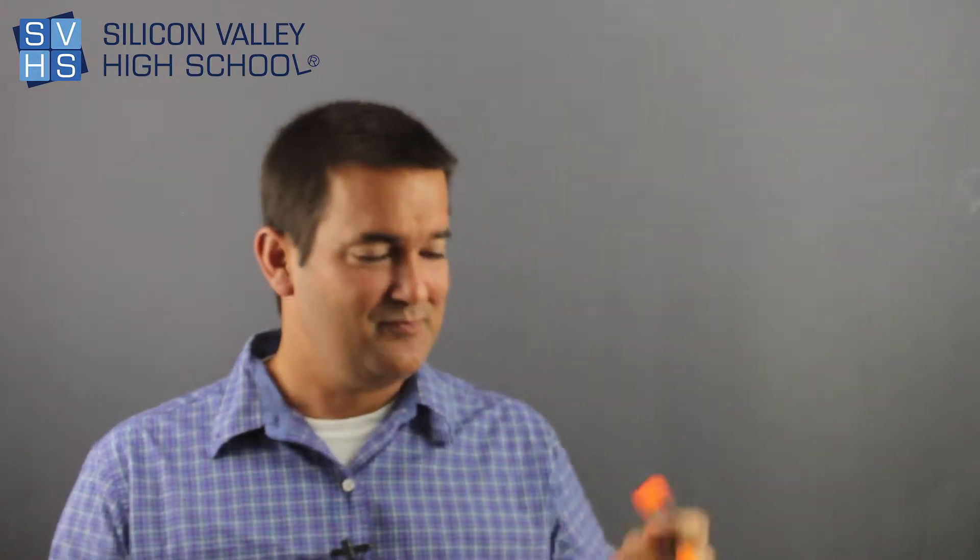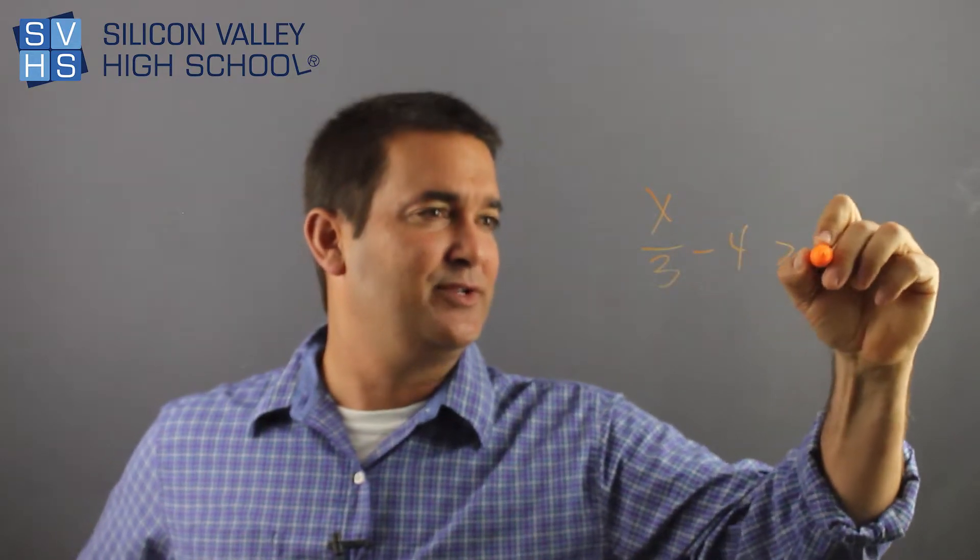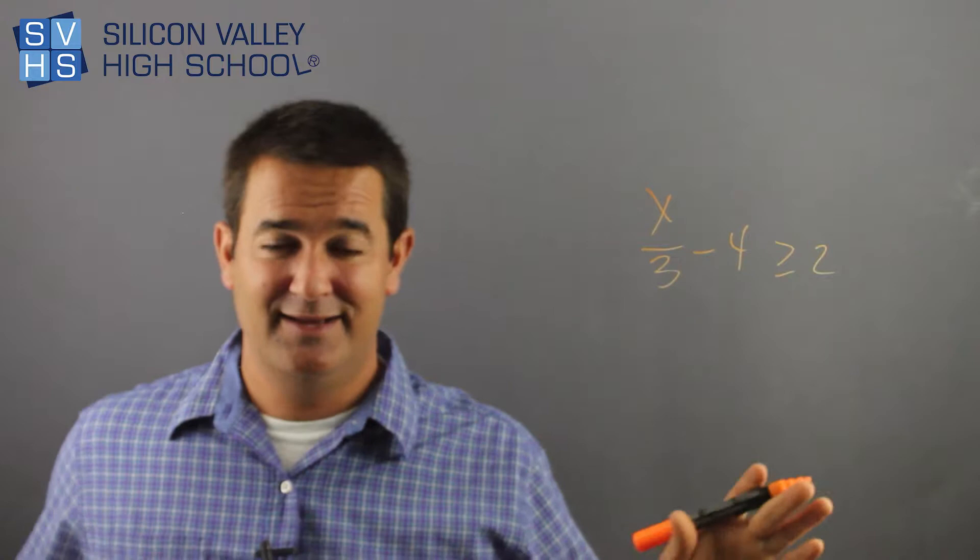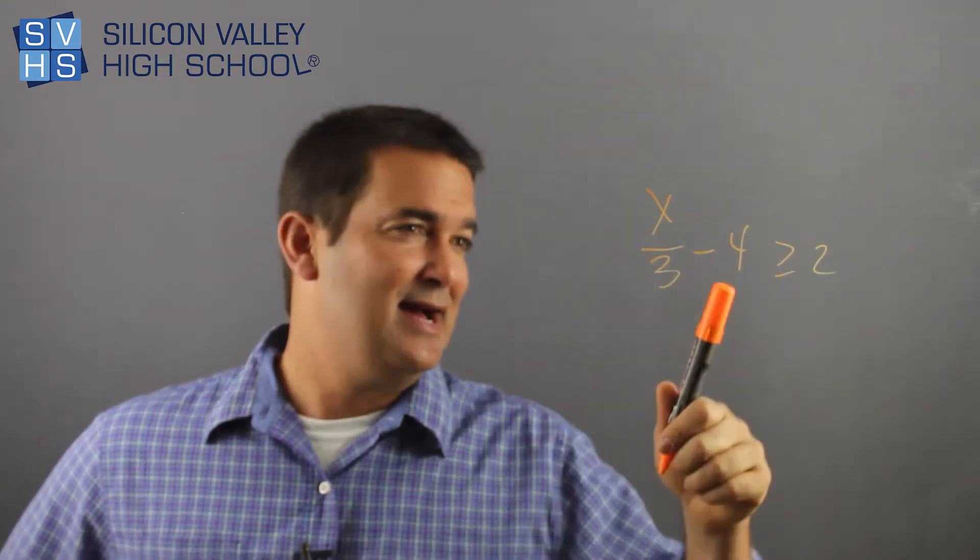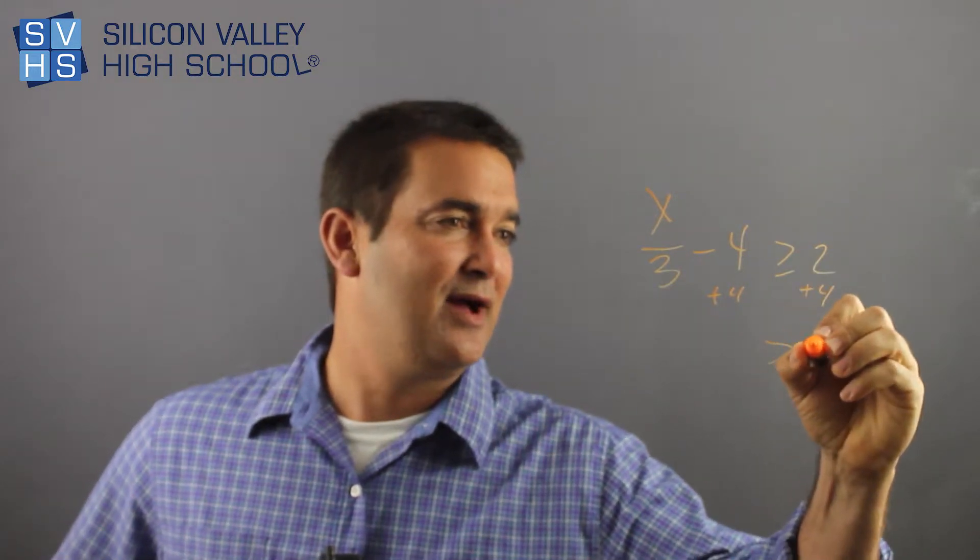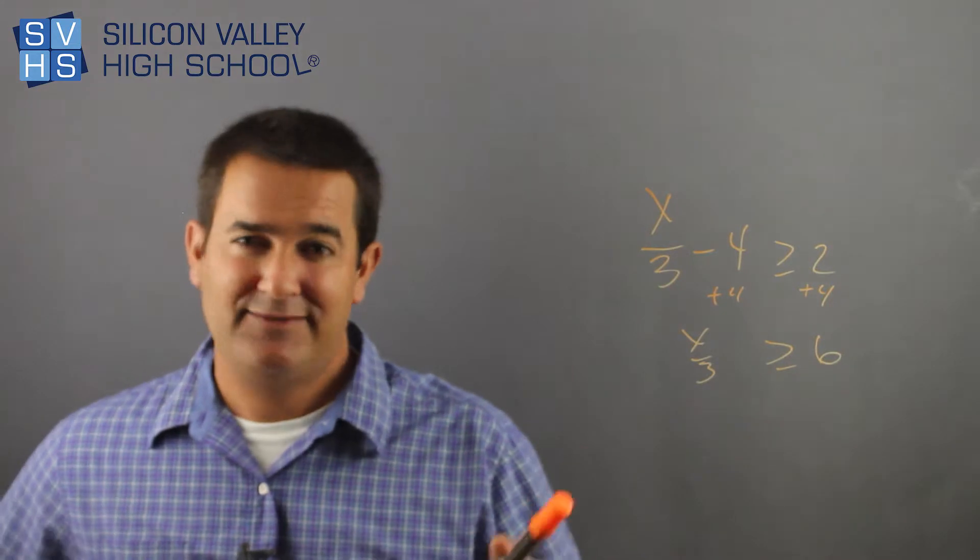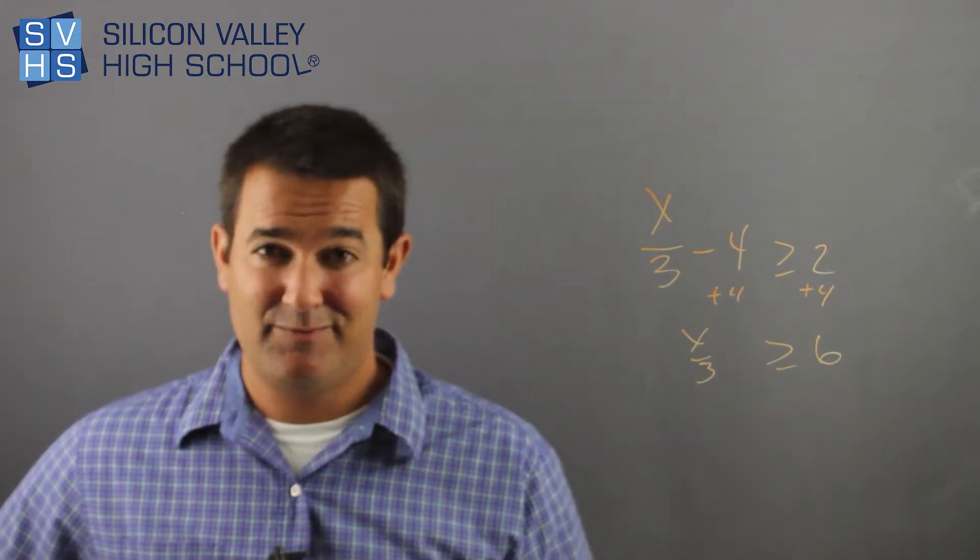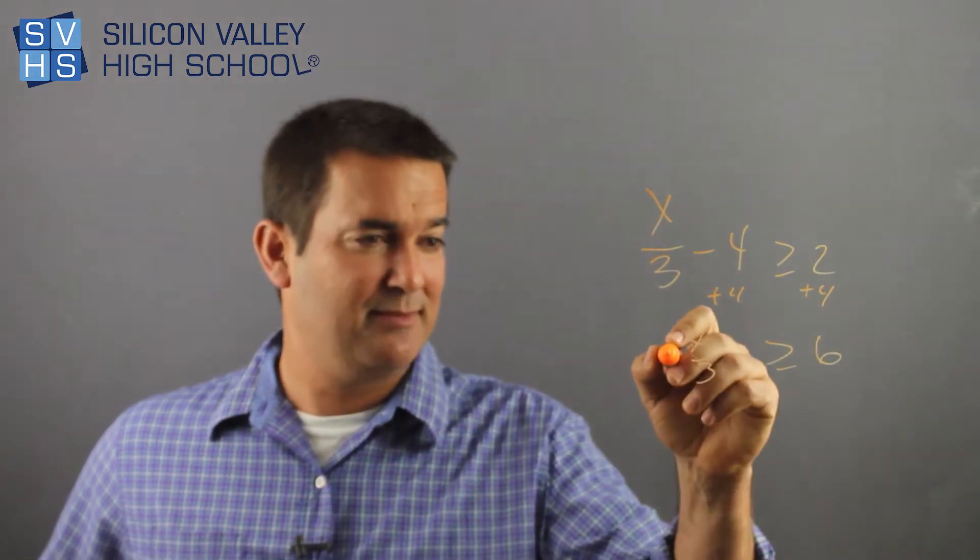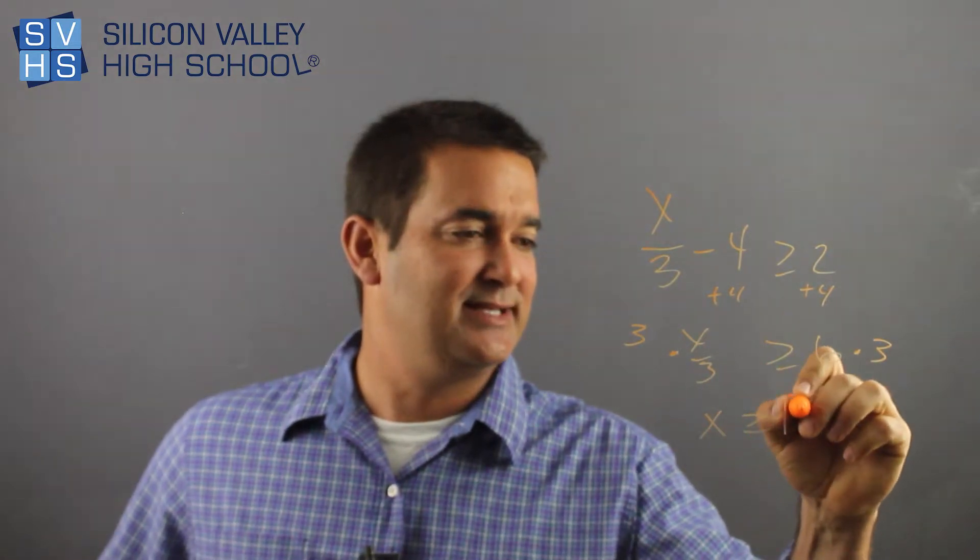Okay, so here's another problem. So x over 3 minus 4 greater than or equal to 2. Same thing. I want to get x alone. There's no x on the right, so we don't have to get all the x's together. I'm going to go ahead and add this 4 out of here to both sides of the sign, and then you have 6 here, and you have x over 3. Okay, pause. I actually have to get x alone, and right now it's divided by 3. What's the opposite of dividing by something? It's multiplying by something times 3 times 3. X is greater than or equal to 18.